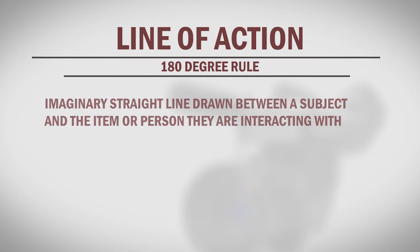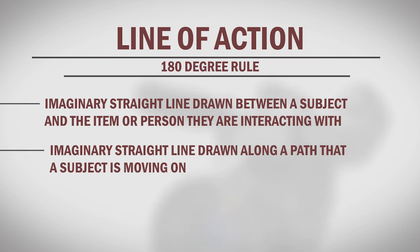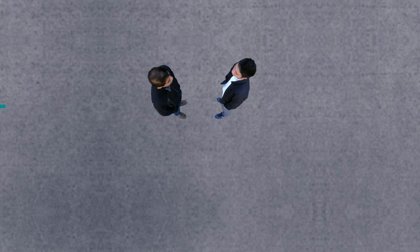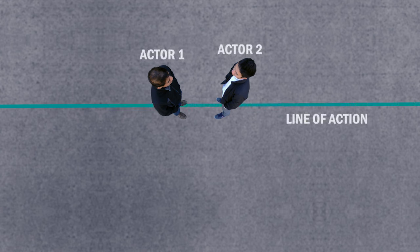The line of action is an imaginary straight line that is drawn between a subject and an item or person they are interacting with, or a straight line drawn along a path that a subject is moving on. Let's look at two actors positioned for a dialogue scene as an example. If we look at this scene from overhead, we can draw a straight line from Actor 1's sight line to Actor 2's. This is our line of action for this scene.